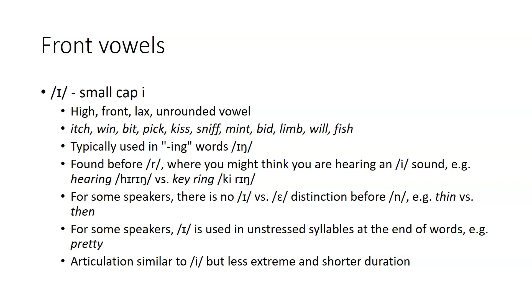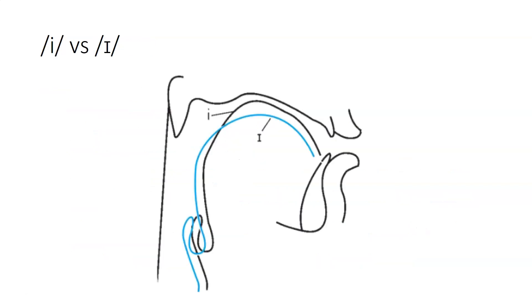Articulation is otherwise just like E, but it's not quite as extreme, and as a lax vowel, it's shorter in duration. Here from x-ray imaging are E versus I tongue positions, where you can see the E has a slightly higher and slightly more forward tongue position.